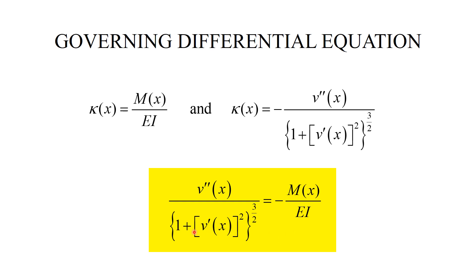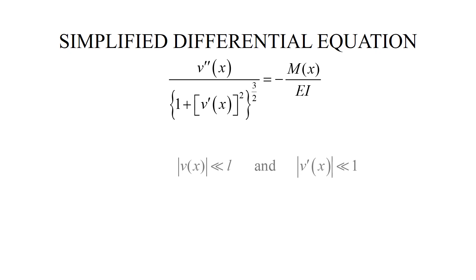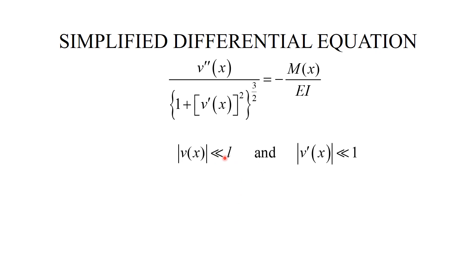To simplify, I introduce the assumption that the deflections of the beam are much smaller than the beam size, which also means the slopes are much smaller than one. Since v prime is much smaller than one, this term becomes negligible compared to one, the entire denominator disappears, and as a result I get a much simpler equation. This is our basic differential equation that we will use to compute the deflection line.